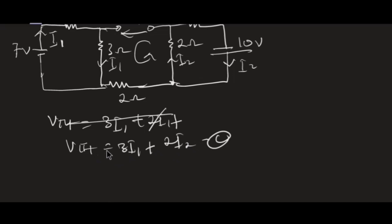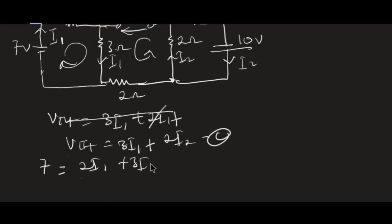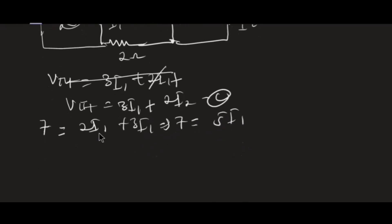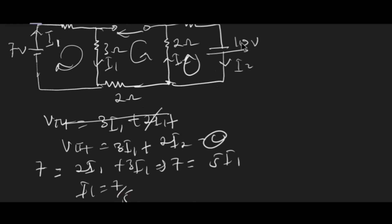To find I1, I take the loop on the left side. The total voltage is 7 volts, which equals the voltage drops: 2·I1 + 3·I1. So 7 = 5·I1, giving I1 = 7/5 amperes.